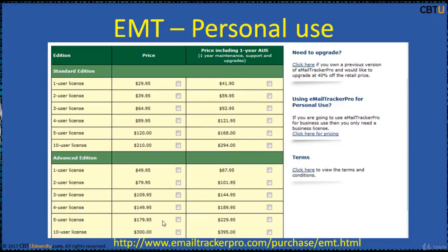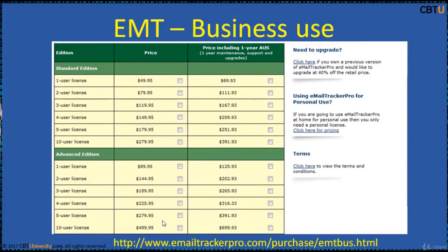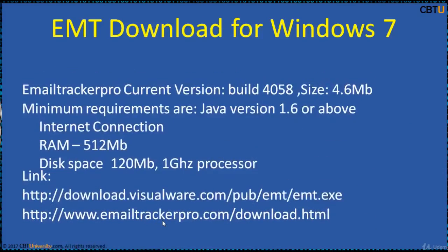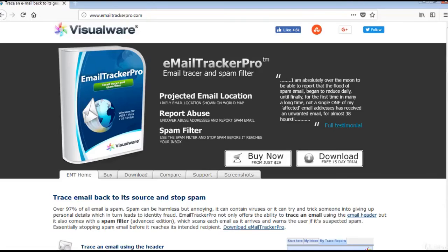Email Tracker Pro is available for personal use and business use as well, and there are standard and advanced editions in each category. The current version of Email Tracker Pro is 4058, and the minimum requirements are Java 1.6 or above, RAM 512 MB, disk space of 120 MB, and a 1 GHz processor.